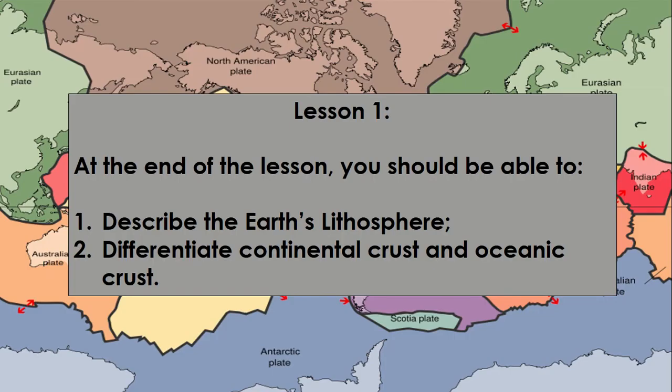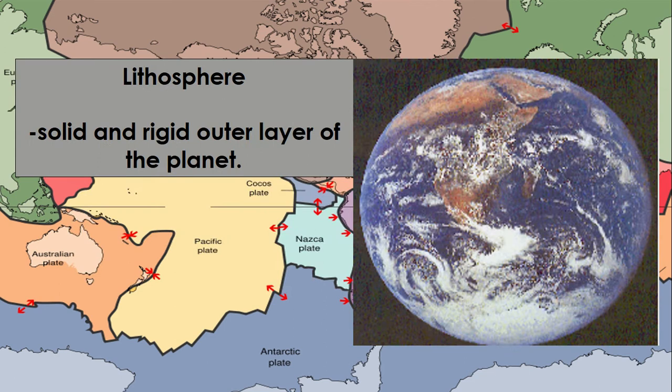For lesson one, at the end of the lesson, you should be able to: first, describe the Earth's lithosphere; and second, differentiate continental crust and oceanic crust.